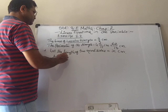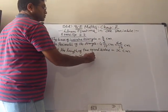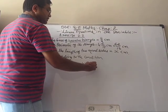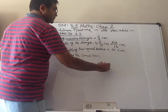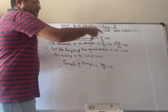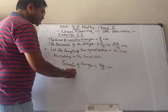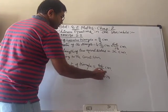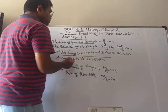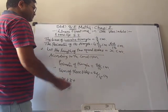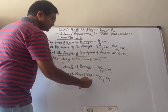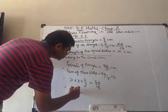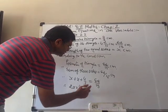Now according to the condition, the perimeter of the triangle is given as 62/15 cm. We know that perimeter means sum of the three sides. So sum of three sides is equal to 62/15 cm. The two equal sides are x and x, plus the base 4/3, gives 62/15 cm.